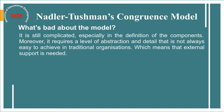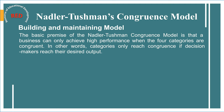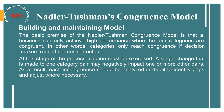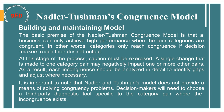Building and maintaining the model: the basic premise is that a business can only achieve high performance when all four categories are congruent — meaning decision-makers reach their desired output. Caution must be exercised, as a single change made to one category pair may negatively impact one or more other pairs. Each incongruence should be analyzed in detail to identify gaps and adjust where necessary. It is important to note that Nadler and Tushman's model does not provide a means of solving congruency problems — decision-makers will need to choose a third-party diagnostic tool specific to the category pair where the incongruence exists.